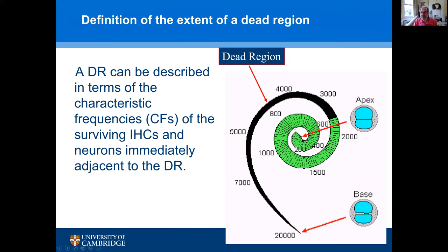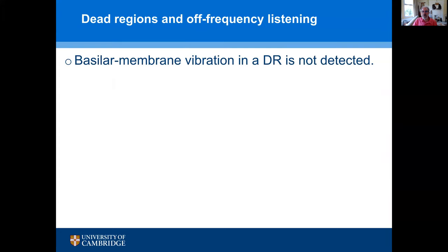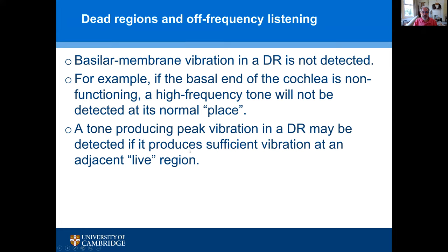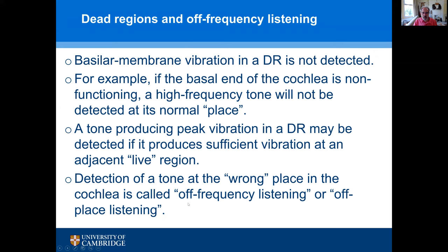We can characterize the extent of the dead region in terms of the characteristic frequencies of the surviving inner hair cells and neurons immediately adjacent to it. In this schematic cochlea, the green area is functioning normally and the black area shows the dead region — in this case the boundary occurs at a place tuned to 2500 Hz, so we say this dead region has an edge frequency of 2500 Hz. Basilar membrane vibration in a dead region is not detected, so a high-frequency tone may be detected if it produces sufficient vibration at an adjacent live region — this is called off-frequency or off-place listening, and tests for diagnosing dead regions are based on detecting this.